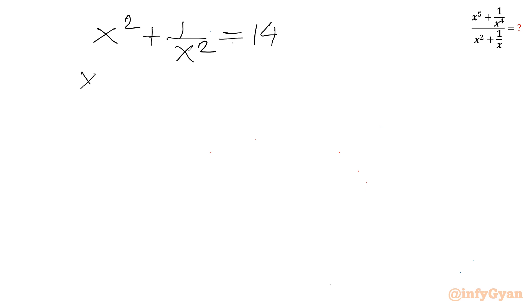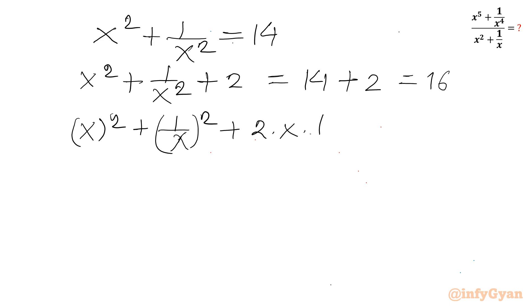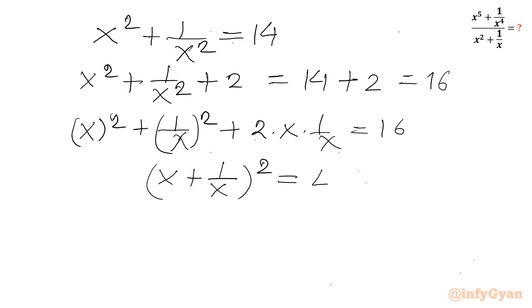Now I will add 2 to both sides again. So x square plus 1 over x square plus 2 equals 14 plus 2, which is 16. Same way, I can write x square plus 1 over x square plus 2 times x times 1 over x, which gives us x plus 1 over x whole square equals 16.